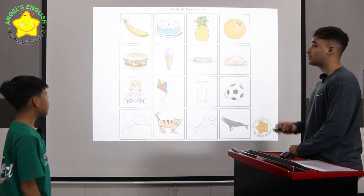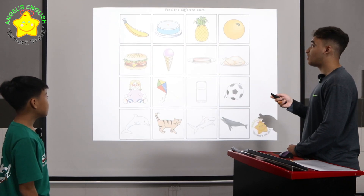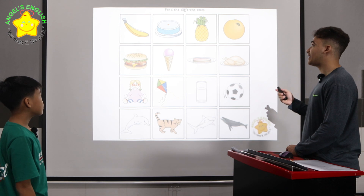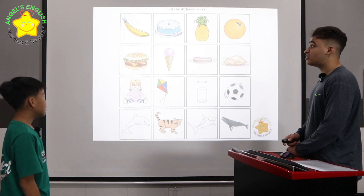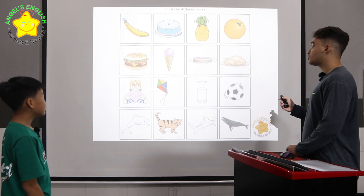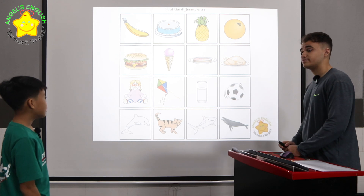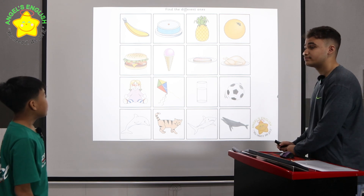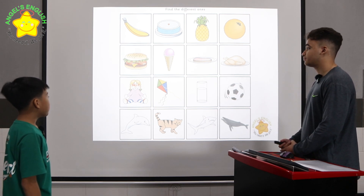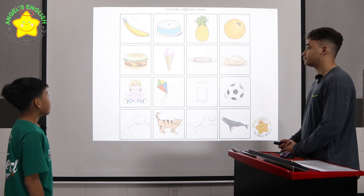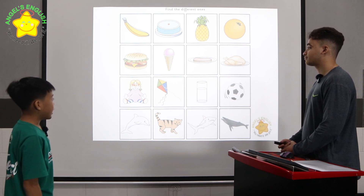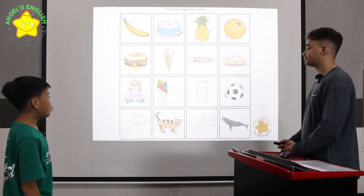This is called find the different ones. In row one, the cake is different because the banana, the pineapple and the orange are all fruits. Can you please tell me which one is different in rows two, three and four? Yes. The ice cream is different because burger, meat and chicken are food.